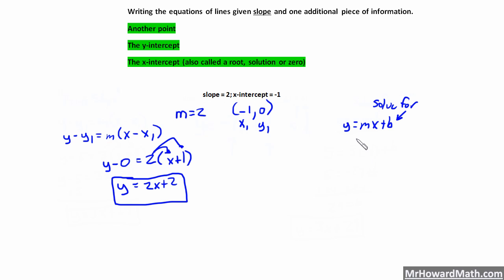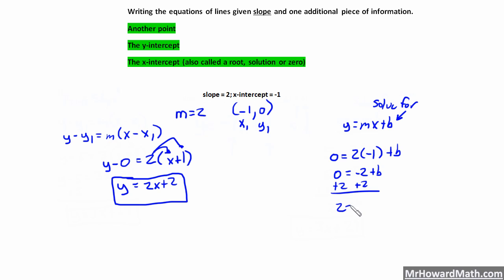Now using y equals mx plus b: y is 0, slope is 2, x is negative 1. So 0 equals 2 times negative 1, which is negative 2, plus b. Adding 2 to both sides gives 2 equals b. With b and m known, we write y equals 2x plus 2 — the same answer either way.